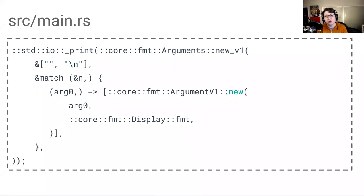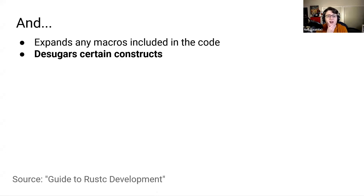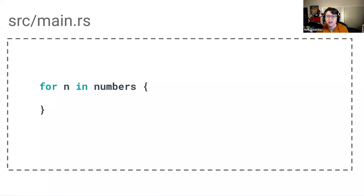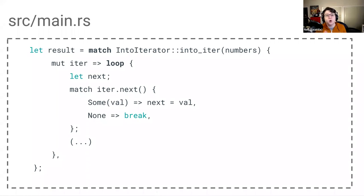So we're taking our Rust code from something fairly straightforward for a human developer to parse and making it easier for the compiler to parse. Then after the macros are expanded, the compiler also desugars some of the syntactic sugar that makes writing Rust so delightful. For example, in Rust, the for loop is a piece of syntactic sugar for an iterator. If we were to desugar this section of code, it will consist of both a match statement and a loop.